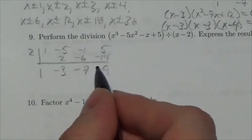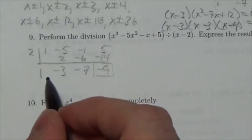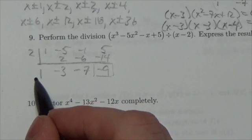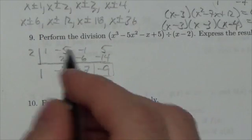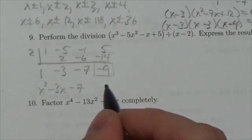This tells me that my remainder is negative 9, and the quotient is x squared minus 3x minus 7.